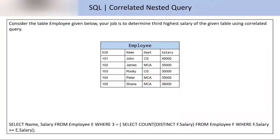Consider the table employee. You have an employee table given below. Your job is to determine the third highest salary of the given table using correlated query. So the condition is that you have to use correlated query to find the third highest salary.